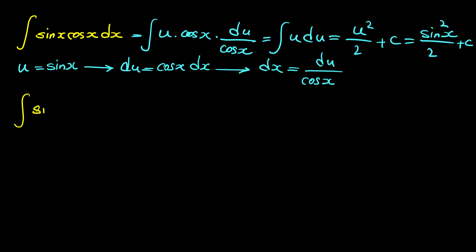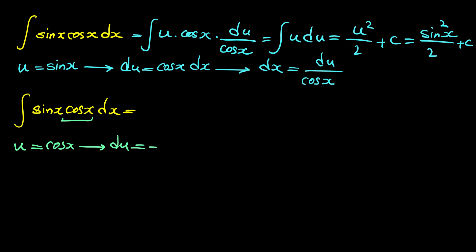Now let me show you another method for finding this integral. In the second method we suppose u to be cosine x, so du equals negative sine x dx. If we solve this for dx, then dx equals du over negative sine x.